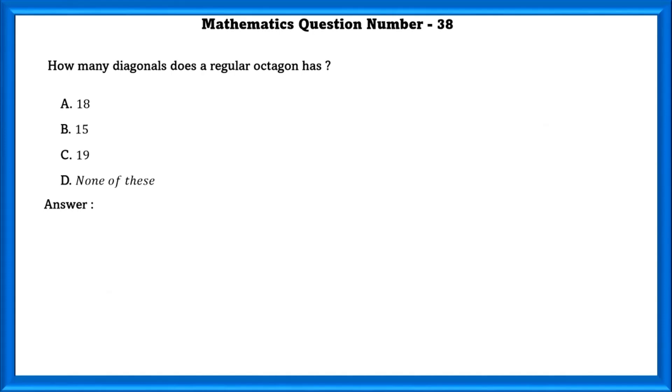Mathematics question number 38. How many diagonals does a regular octagon have? Number of diagonals a regular octagon has is equal to 20 which is not there in the option so none of these.